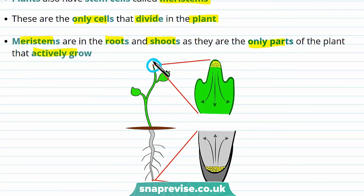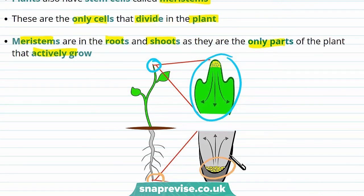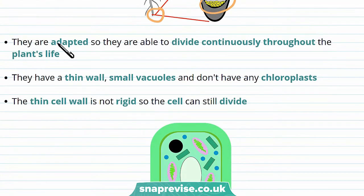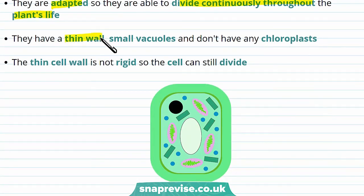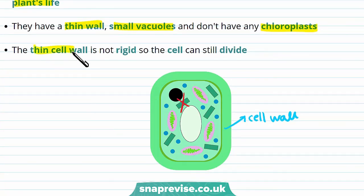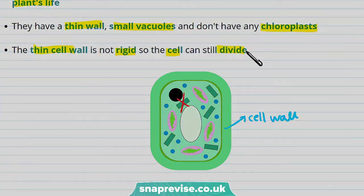In this diagram, this is the shoot of the plant, and these are the meristems in the shoot, and that helps it grow upwards. This is the root of the plant, and the meristems in the root help the root grow outwards, so it can find nutrients and mineral ions as well as water for the plant to grow healthily. Meristems in plant cells are actually adapted so they can divide continuously throughout the plant's life, and this is because they have things like a thin wall — so compared to this diagram, the cell wall would be very thin. They also have small vacuoles, and they don't have any chloroplasts as they don't photosynthesise. The important feature of having a thin cell wall is that it's not rigid, so the cell can still divide throughout the plant's life.